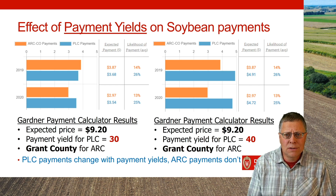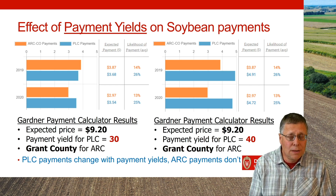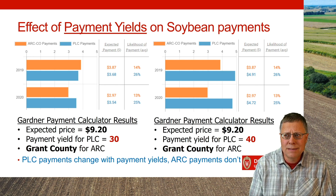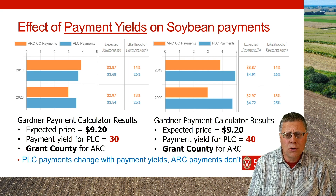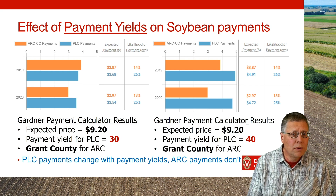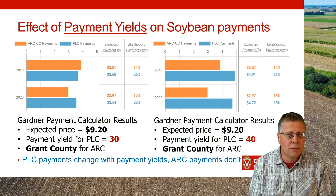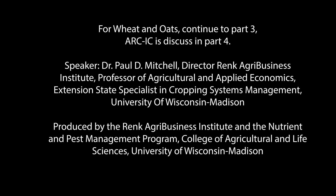The last variable is payment yields. Using Grant County with 30 versus 40 bushels per acre — everything else the same — at 30 bushels per acre ARC may be the better deal, but at 40 bushels per acre it's PLC. So again, it really depends on what your payment yields are, what county you're in, and what you think prices are going to be.